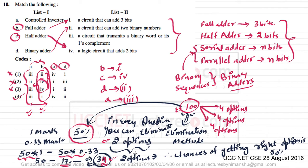This is one strategy students can follow when they don't know the answers. When you feel you are not qualifying the examination, this strategy helps because it is purely based on statistics and mathematics. Out of 100 questions, if you implement this correctly, you can score around 32–33 positive marks, which creates a huge difference in your ranks and future prospects.